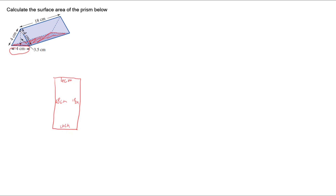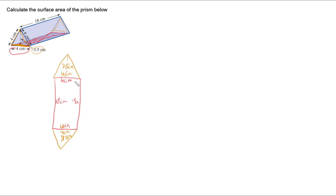We can then look at the triangle which joins onto that rectangle. I can draw a triangle coming off of it. This triangle has a base of 4cm and a height of 3.5cm. There's another one of these triangles at the back, and because this is a prism they're going to be exactly the same triangle.